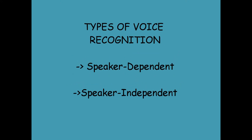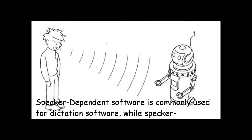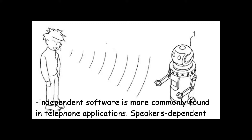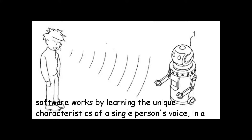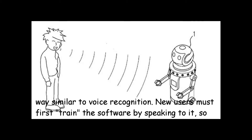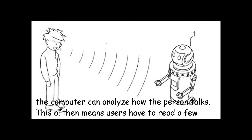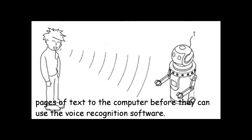There are two types of voice recognition. One is called speaker-dependent and the other is speaker-independent. Speaker-dependent software is commonly used for dictation software, while speaker-independent software is more commonly found in telephone applications. Speaker-dependent software works by learning the unique characteristics of a single person's voice. New users must first train the software by speaking to it, so the computer can analyze how the person talks. This often means users have to read a few pages of text to the computer before they can use the speech recognition software.